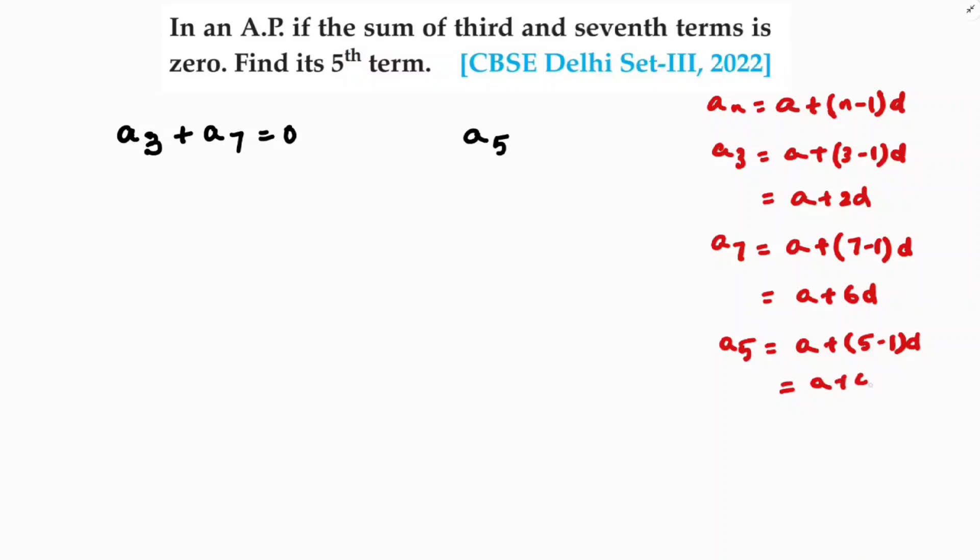So here, if we'll substitute the values, a3 is a plus 2d and a7 is a plus 6d.